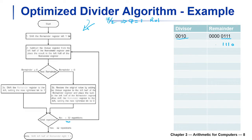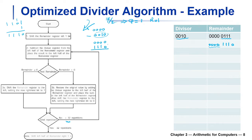After the initial left shift, we enter the iteration. We subtract the divisor register from the left half of the remainder register. We don't do subtraction directly — we do addition with the two's complement. The two's complement of 0010 is 1110. Adding 0000 and 1110 gives us 1110, so the left half becomes 1110 and the right half stays the same.